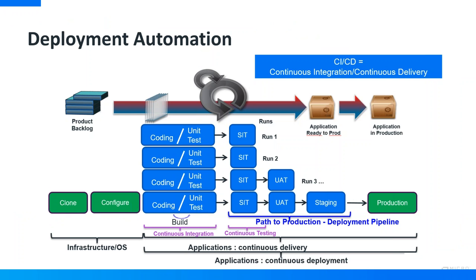Deployment Automation est une solution de CICD — Continuous Integration, Continuous Delivery. En entrée, on a les changements produits par les équipes de développement à pousser dans les différents environnements jusqu'à la production. Ces versions d'applications sont d'abord fabriquées au travers des plateformes de Continuous Integration, classiquement des plateformes comme Jenkins, qui est la solution la plus répandue sur le marché.